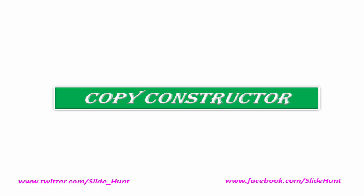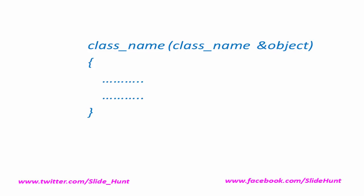Next we see the syntax of copy constructor. To declare a copy constructor, first we have to write the class name and then within the parenthesis write the object name by which we want to initialize another object. We know a copy constructor accepts a reference to its own class as a parameter. So first write the class name and then ampersand object name. Here object is passed by reference.